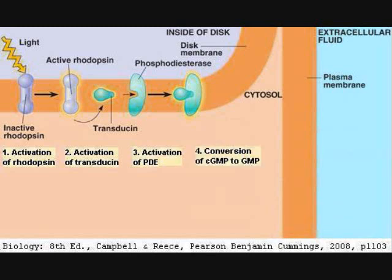The fourth step is conversion of cyclic GMP into regular GMP. Phosphodiesterase is an enzyme that cleaves certain phosphodiester bonds. In particular, it cleaves a certain bond in cyclic GMP, thereby breaking the ring and forming regular GMP.